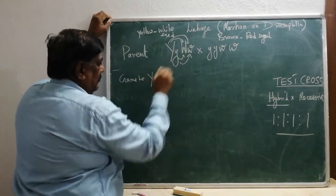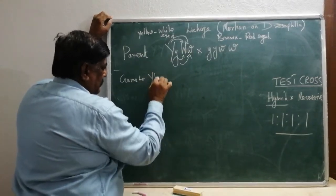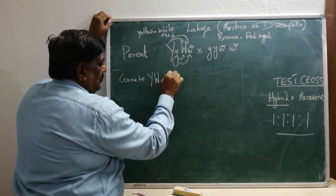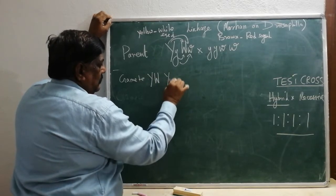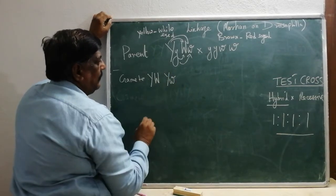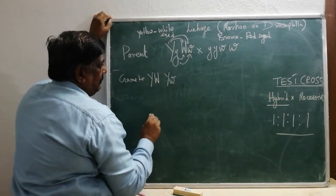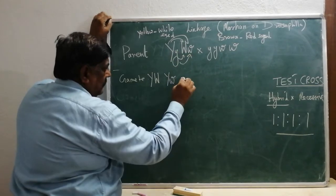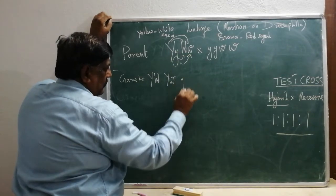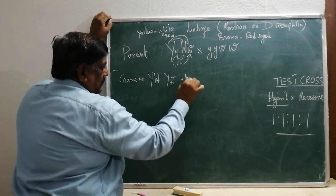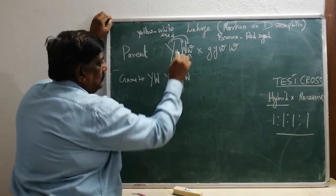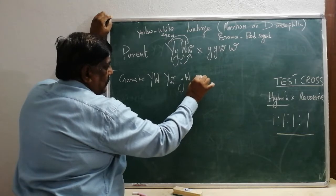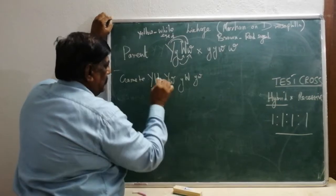Four types of gametes are produced from the hybrid: capital Y capital W, capital Y small w, small y capital W, and small y small w.